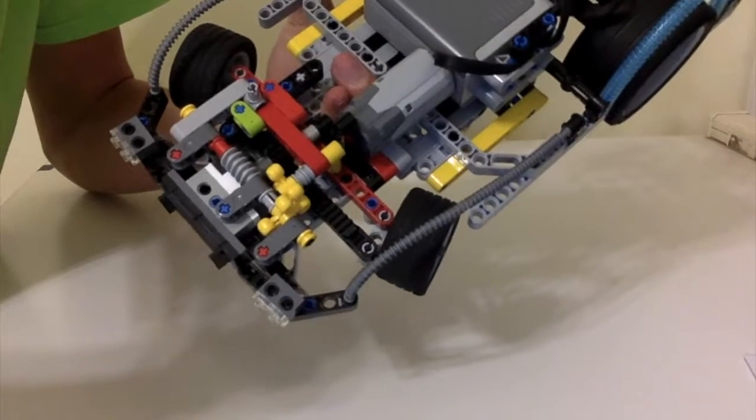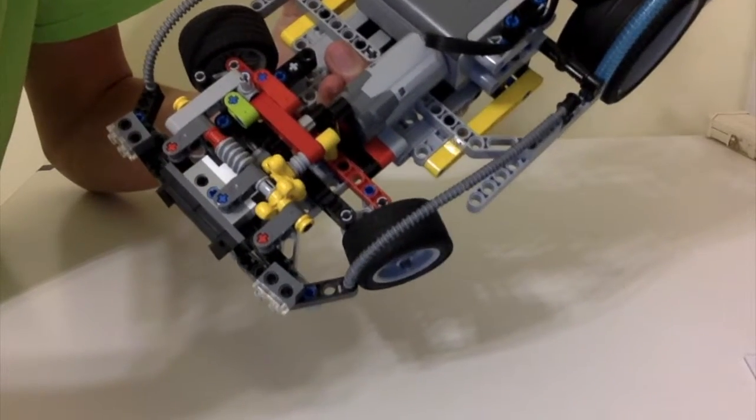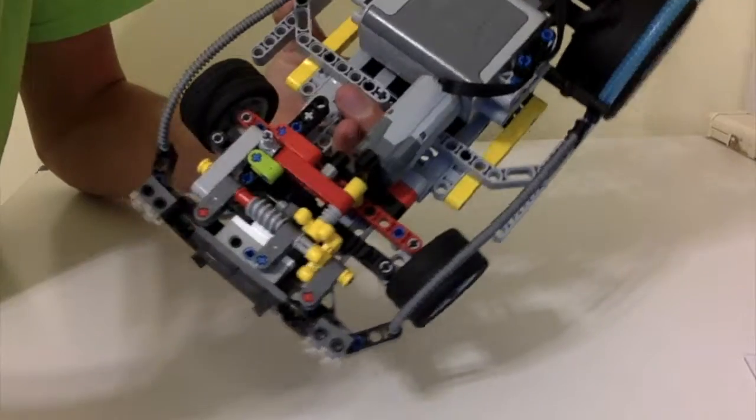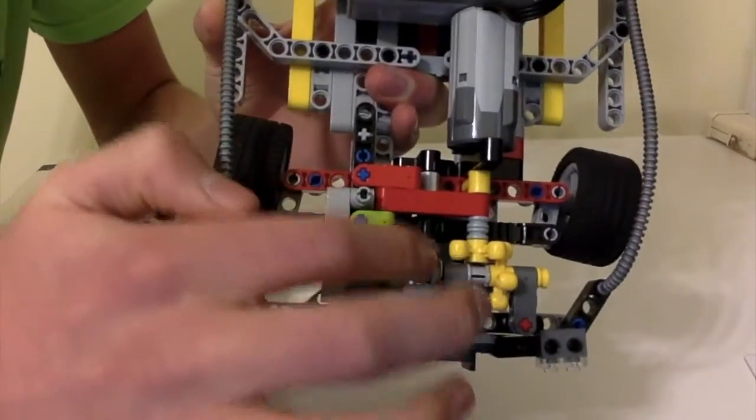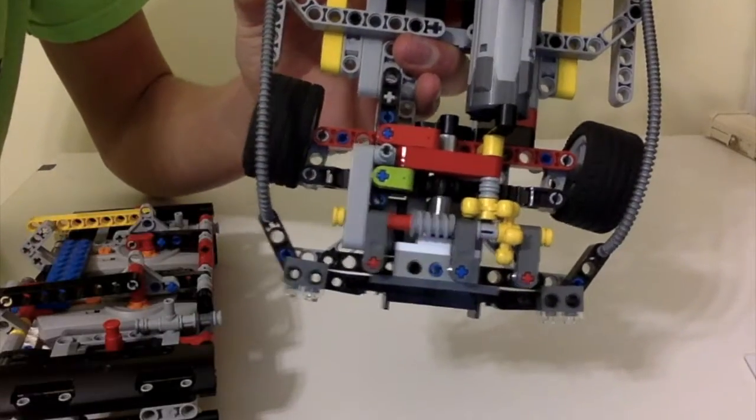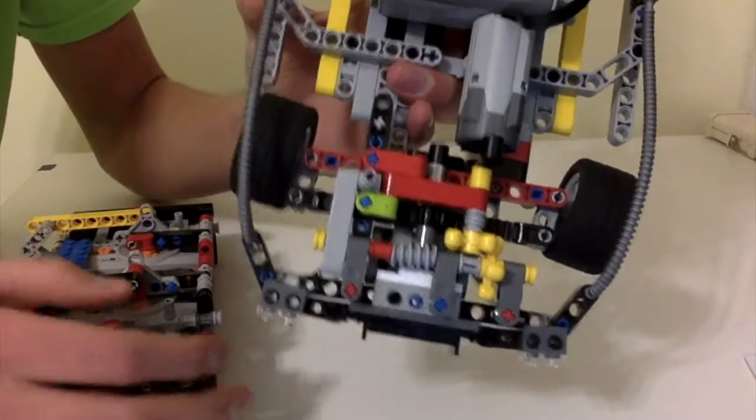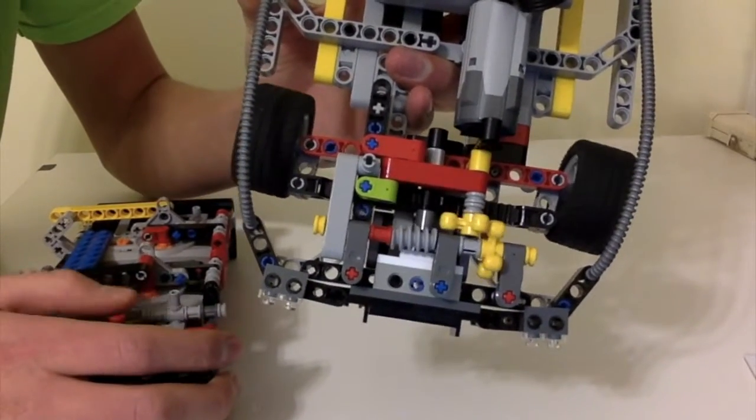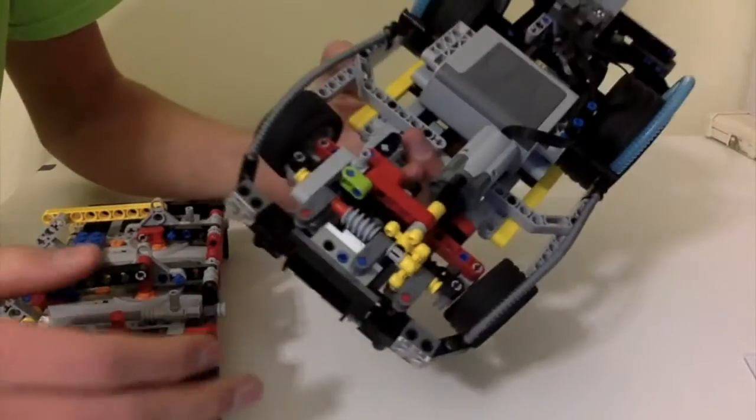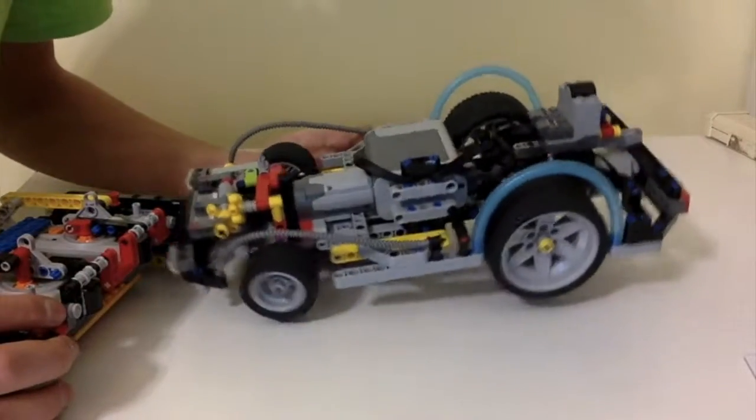As you can see, I use a worm gear here because simply turning it, it's a bit too fast so I can't really drive straight. Like this I have more control over the car itself.